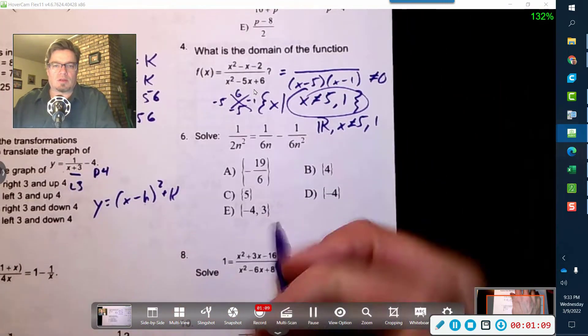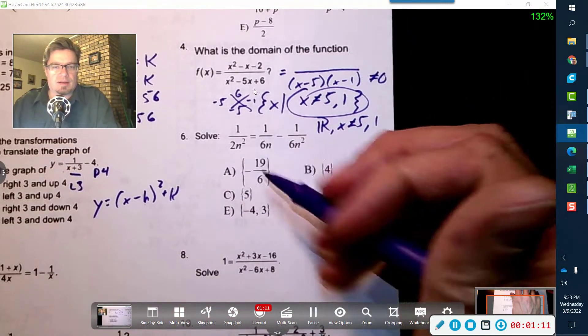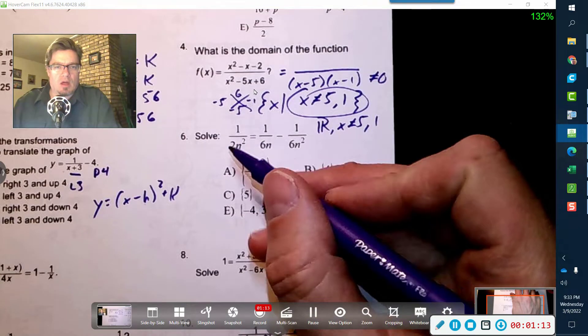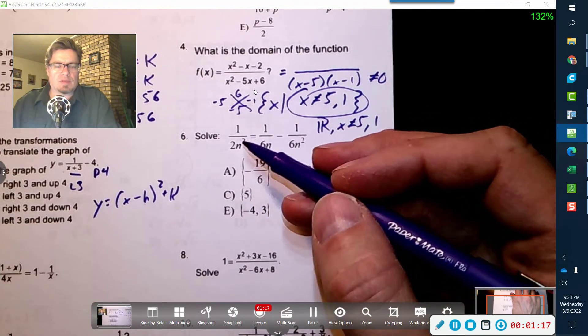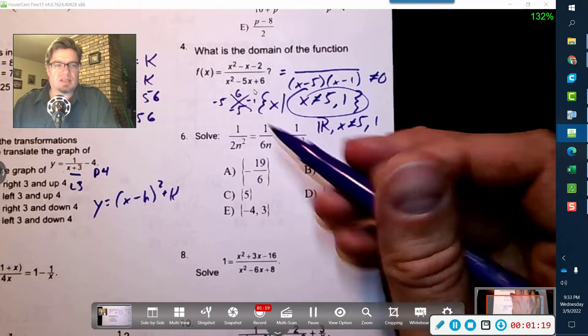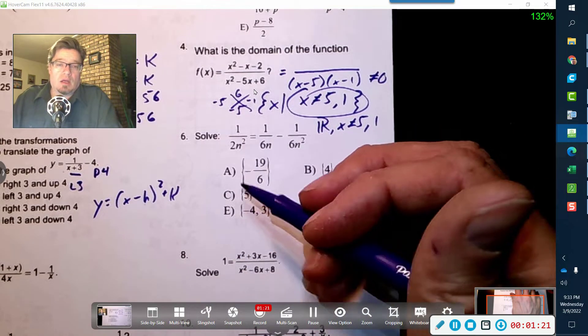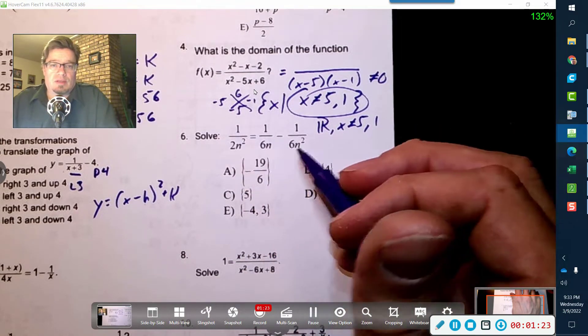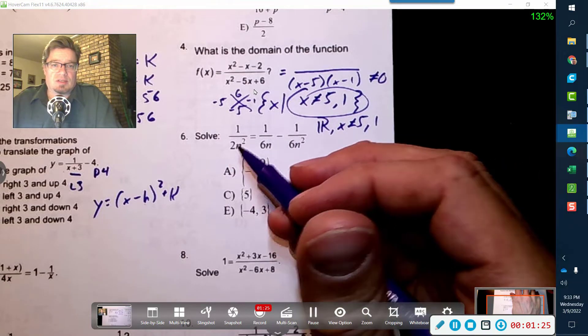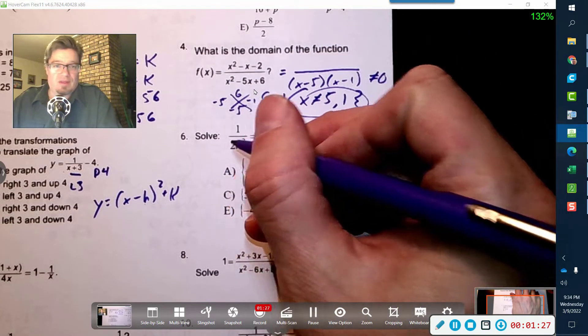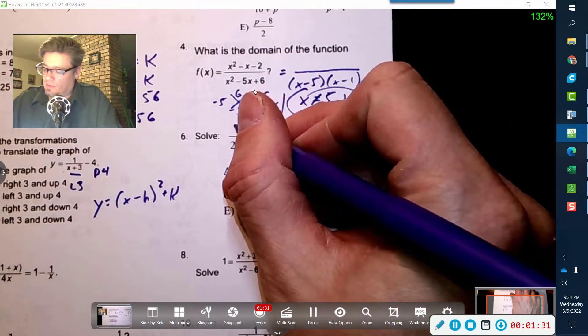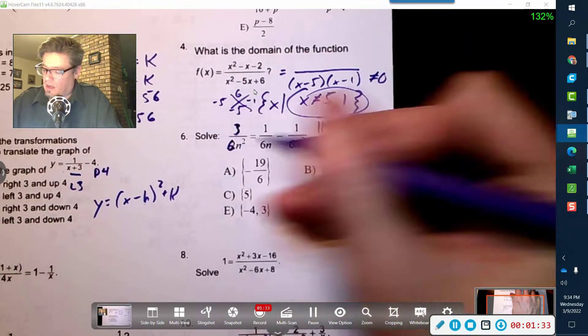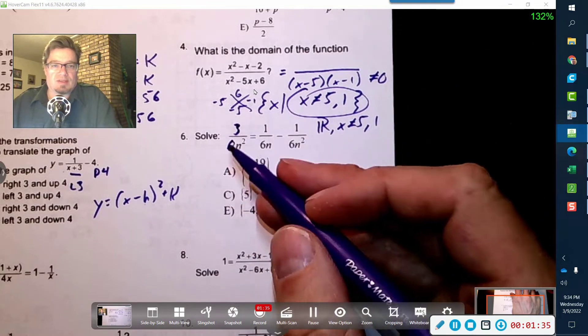Alright, so we're going to try to squeeze this in on this paper here. We're looking for a common denominator. Now, I see a 2, and these guys are 6s, so it's much easier for me to try to convert this to a 6. So what I'm going to do is multiply the top and the bottom by 3, so now it's a 6.